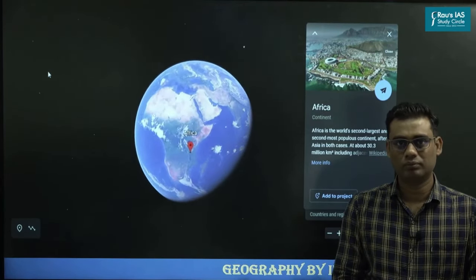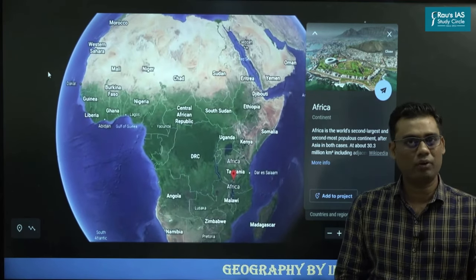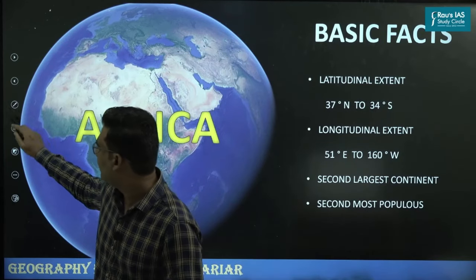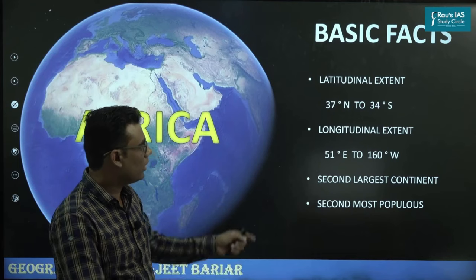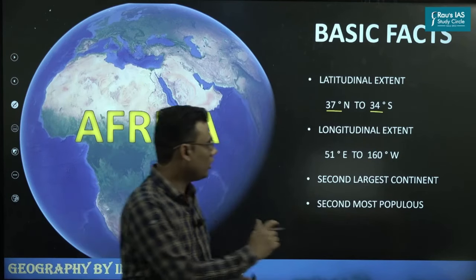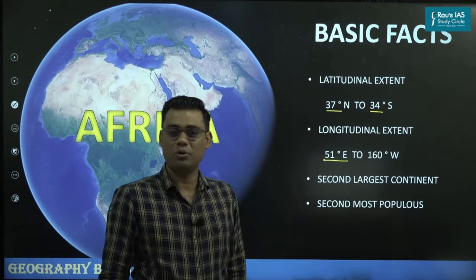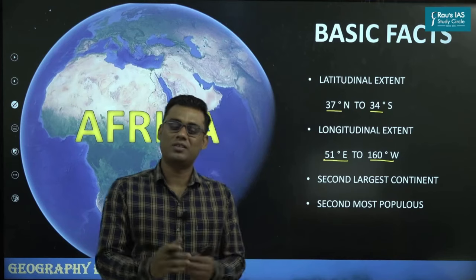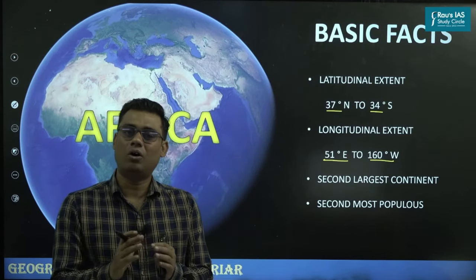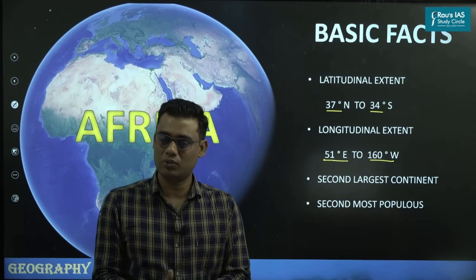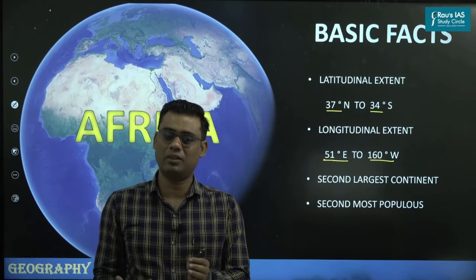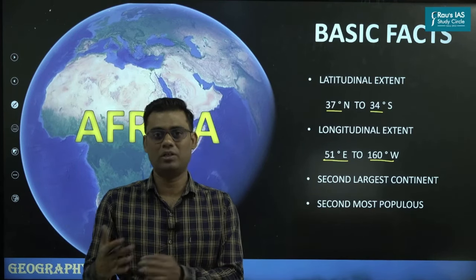Africa as a continent — first we will deal with some basic facts. The first thing is the latitudinal and longitudinal extent. Africa extends from 37 degrees north to 34 degrees south, and this continent spreads through 51 degrees east to 16 degrees west, which makes it the only continent in the world that lies in all four quadrants — northern as well as southern hemisphere, and eastern as well as western hemisphere.